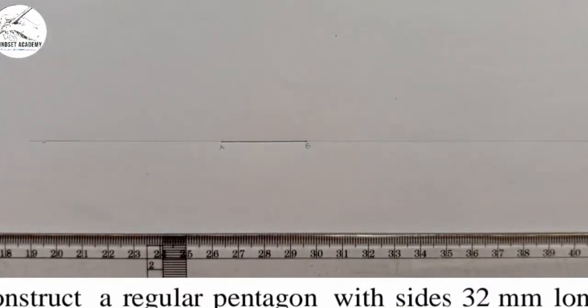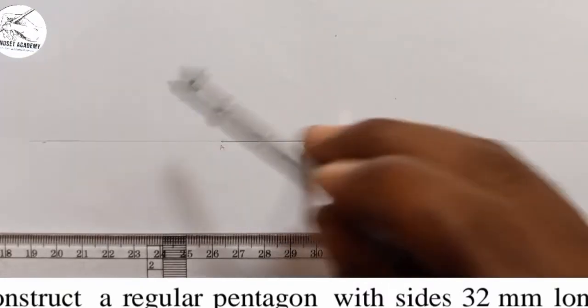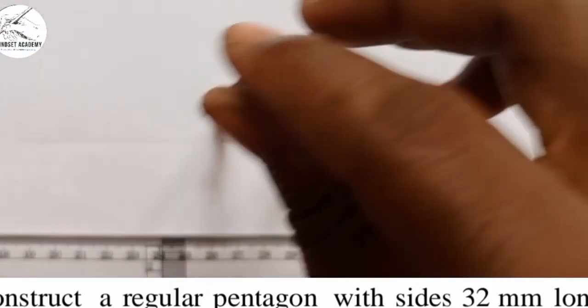Now the next thing I am going to do is, placing my compass at B with radius A. I am going to draw a circle.